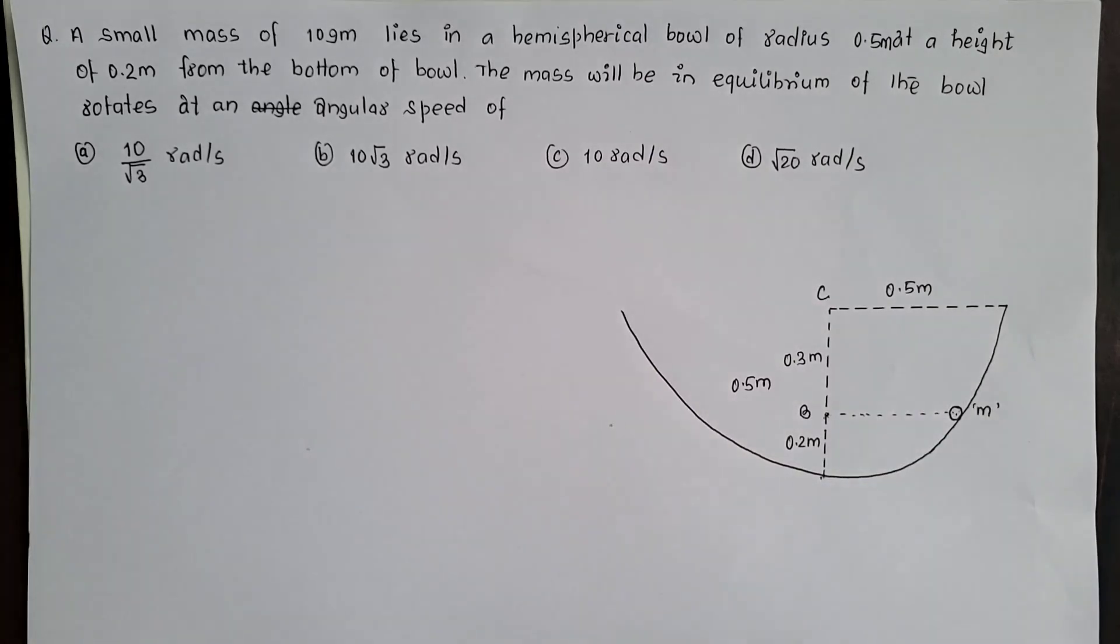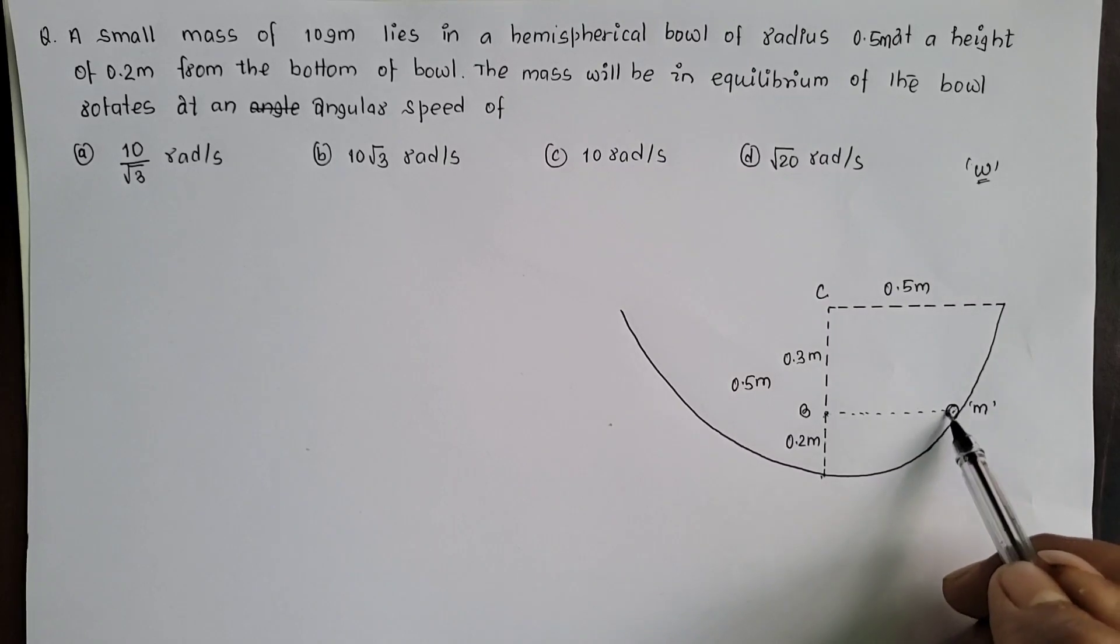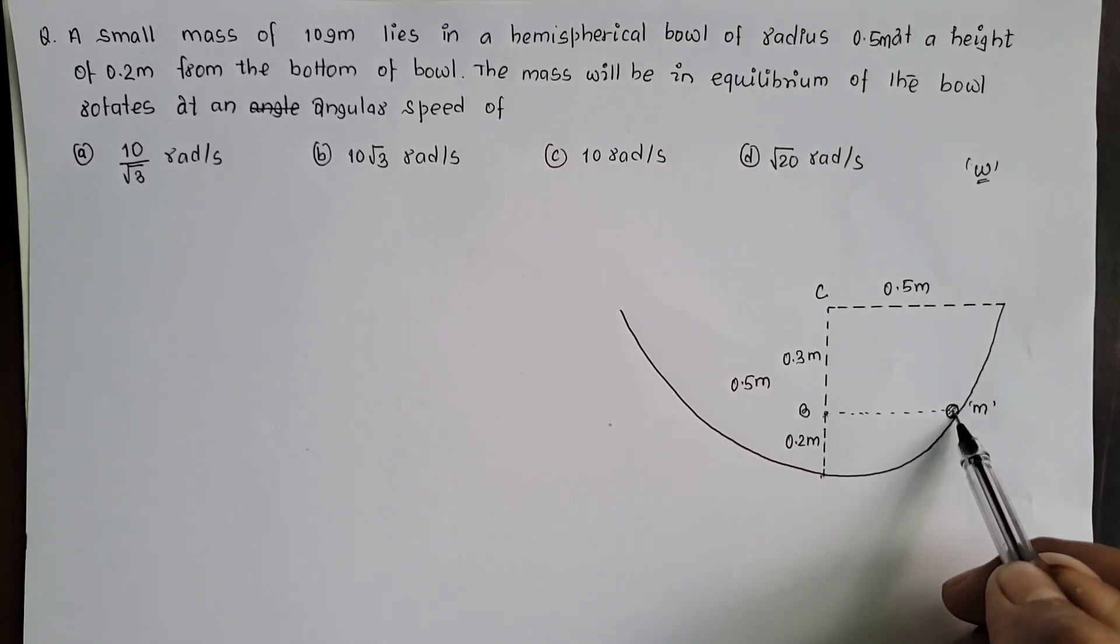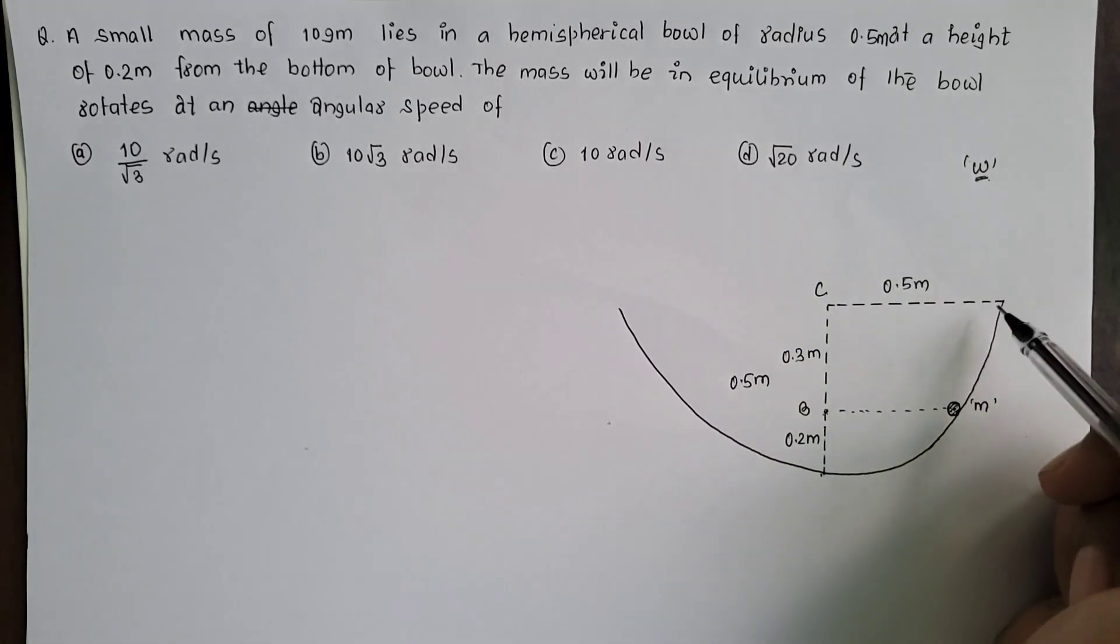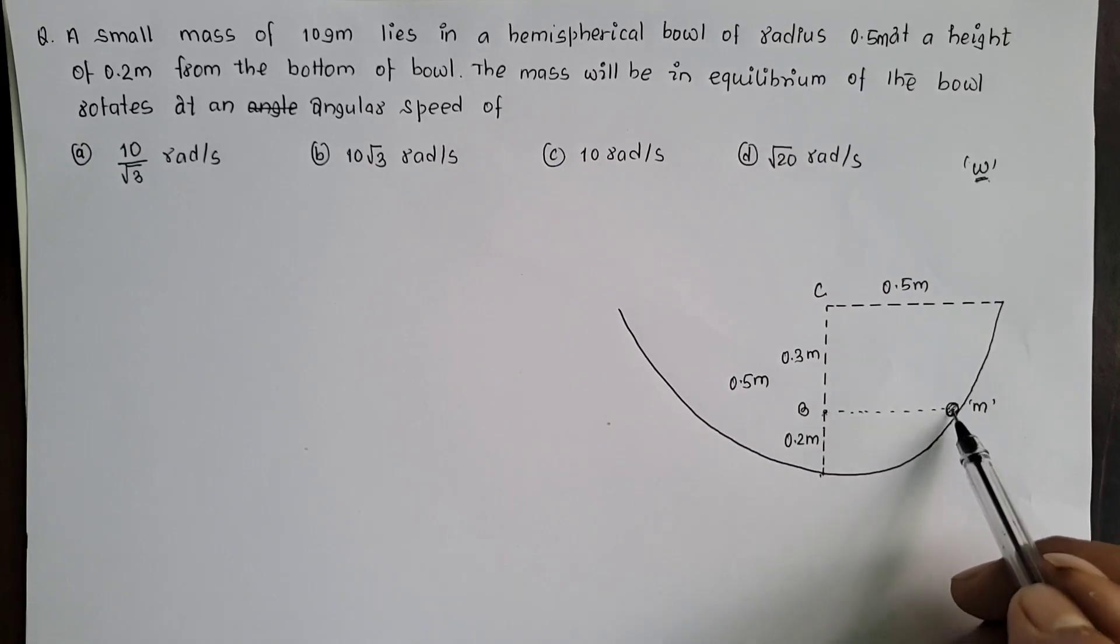Question ma shodhegusa, yoh bowl ko angular speed josle gata khedhi, yoh mass equilibrium ma runcha. That means, same position ma lai garcha, banera sodee gacha. Saapos gara omega baneku required angular speed of the bowl with which this mass remains inside of the bowl in equilibrium.